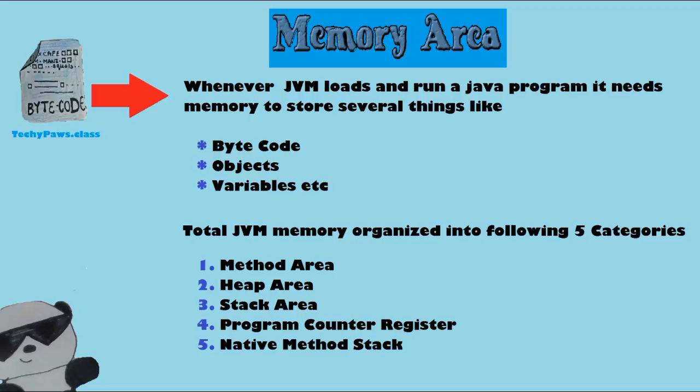For each JVM, one heap area is available, created at JVM startup. Objects and corresponding instance variables are stored in the heap area. The stack area is thread-based and consists of three parts: local variable array, operand stack, and frame data. Data stored in the stack is available only to the corresponding thread and not to other threads, making it thread-safe.